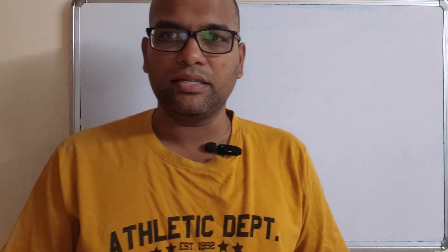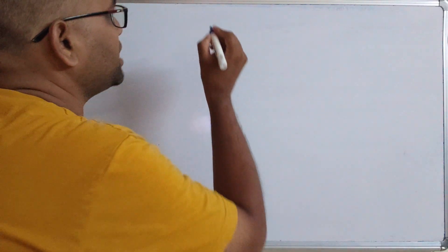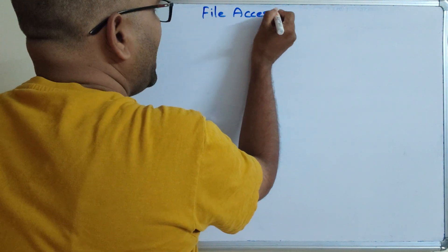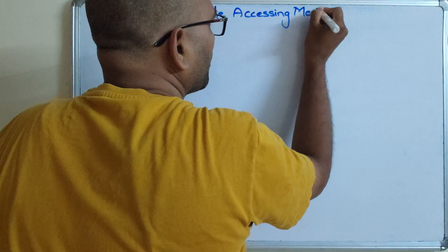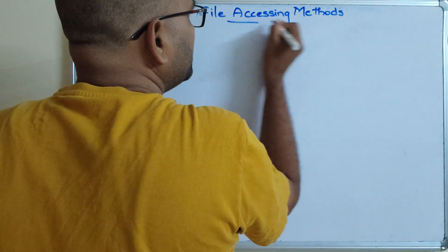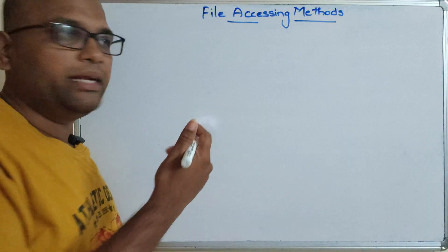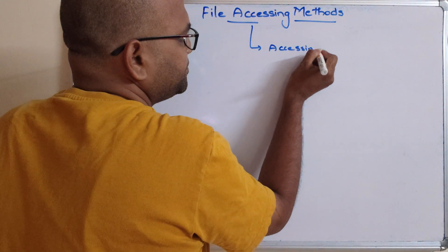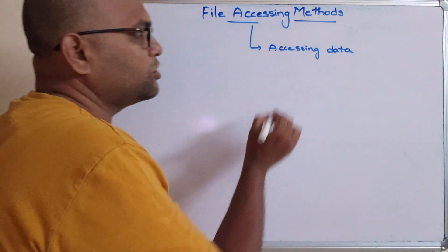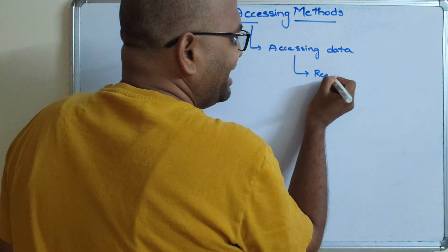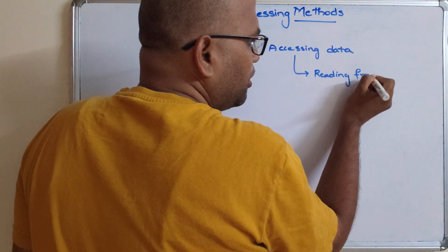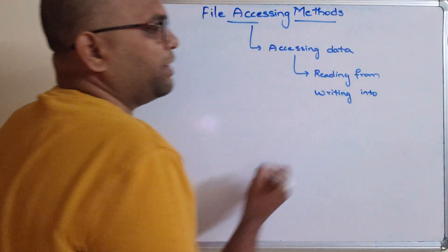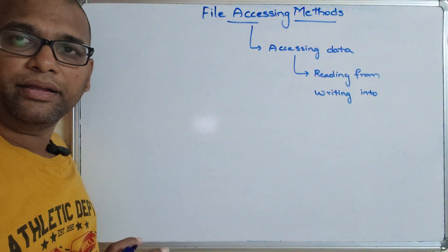So without delay, let us start with file accessing methods. File accessing methods is nothing but accessing the data — either reading from a file or writing into a file. So accessing means reading or writing.